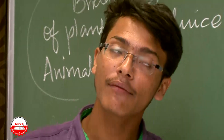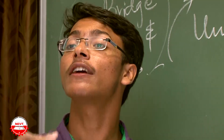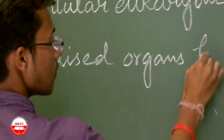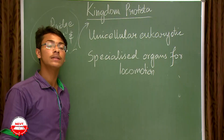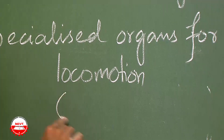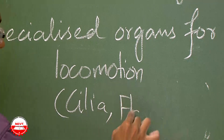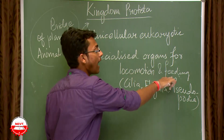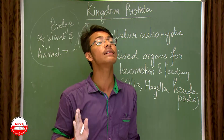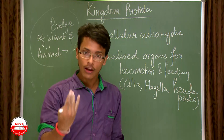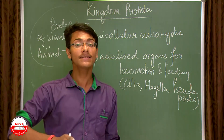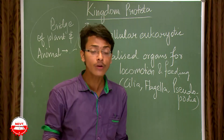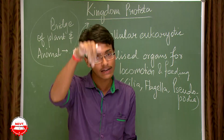The second characteristic of Protista is that they have specialized organs for locomotion and feeding. Those specialized structures are cilia, flagella, and pseudopodia, depending on the type of protist. The beating of hair-like cilia or whip-like flagella helps the organism move from one place to another by pushing water behind them, as they are mostly found in water. The beating of cilia also directs food toward the mouth.